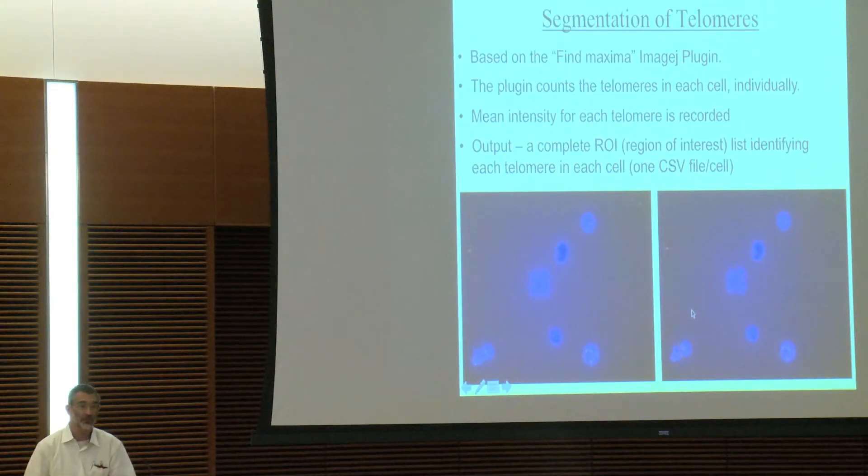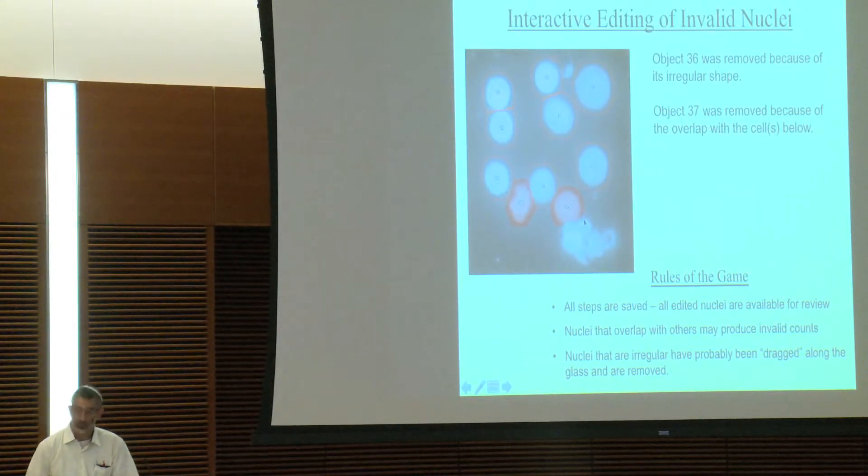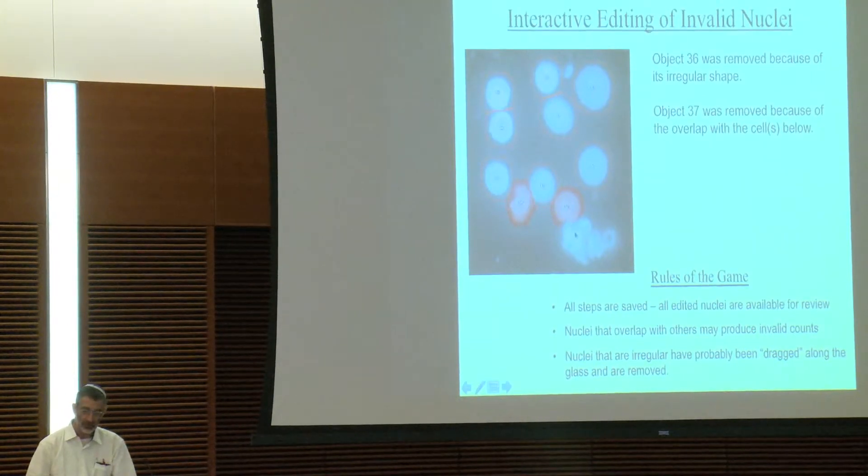So we have a manual editing step in the way. It's a very nice little tool that a student wrote to mark cells, which this one here is folded over on itself. This one here has some overlap from other cells. We can't count telomeres in overlapping cells because we won't get a valid count, obviously.